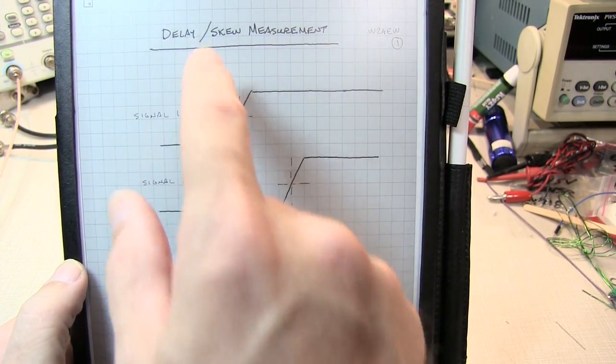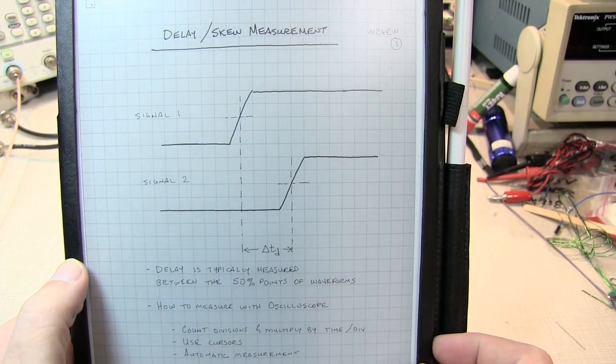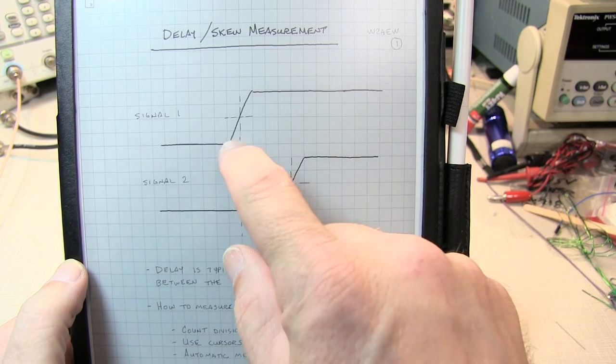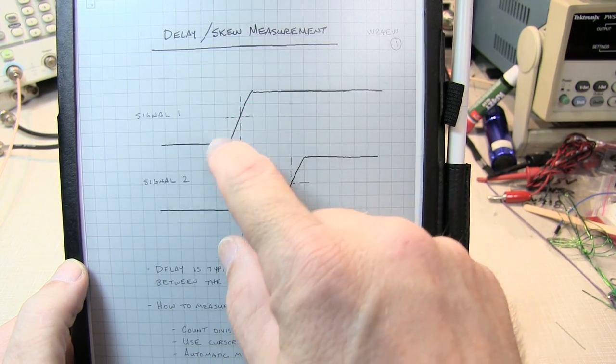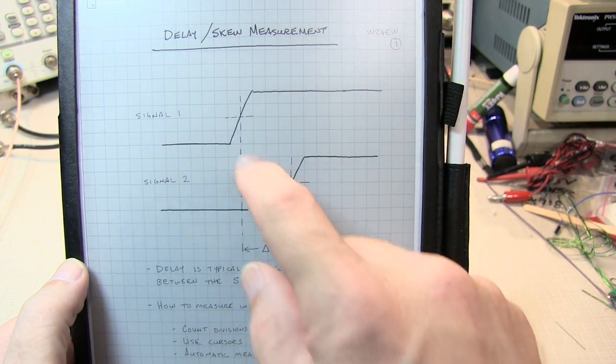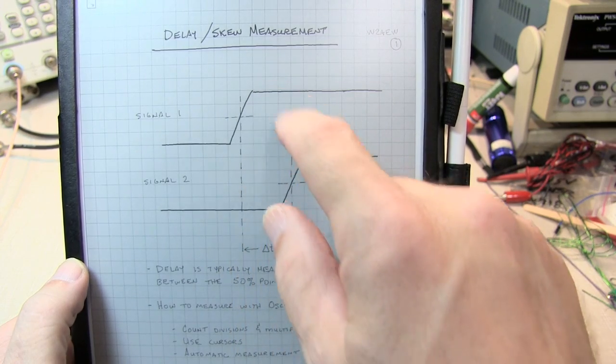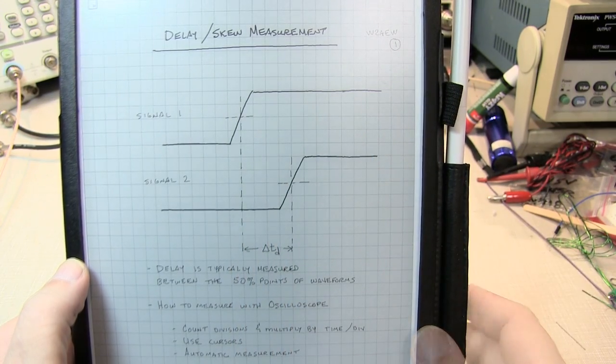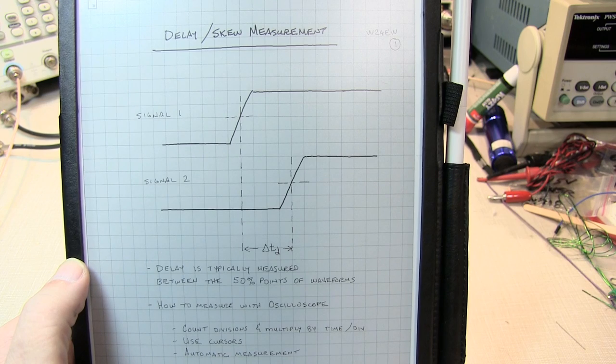Regardless of the term being used, the measurement is typically done the same way. Most often we make the measurement at the 50% point of each of the signals, halfway up the rising edge or maybe halfway down the falling edge.